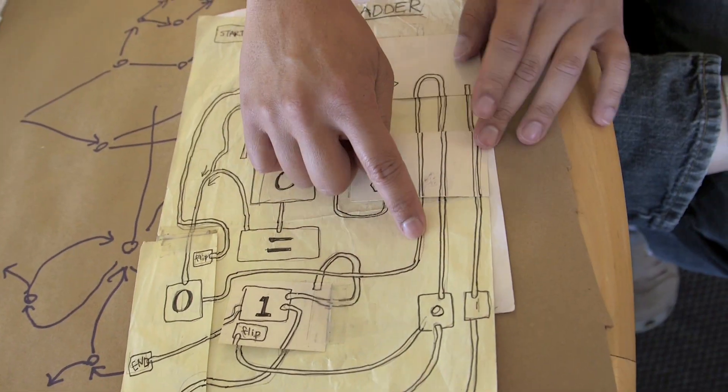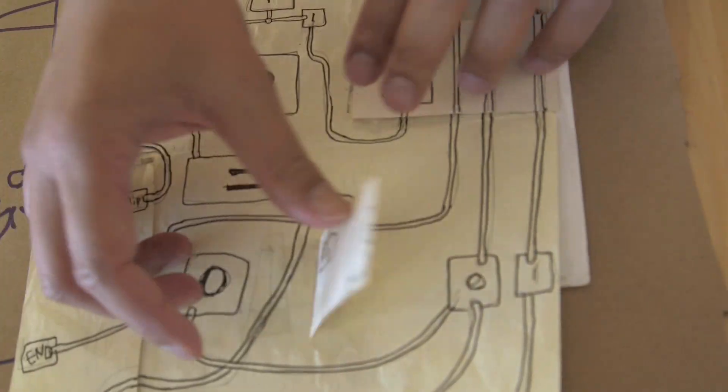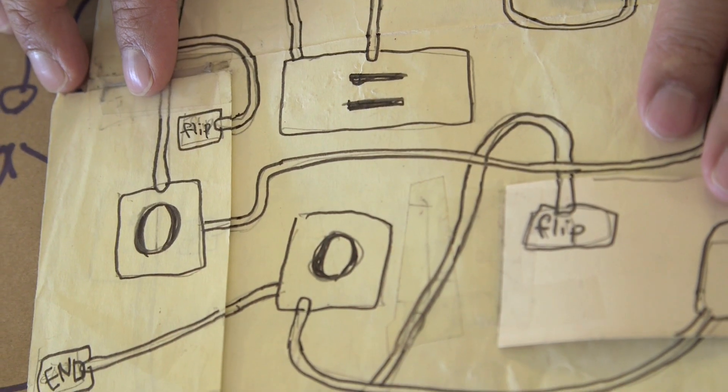You follow these paths. When you get to here, it says to flip. And then you get to the end. So your answer is zero, zero. Alright.